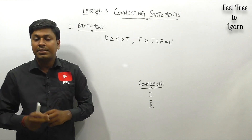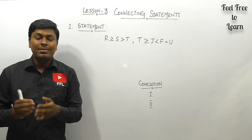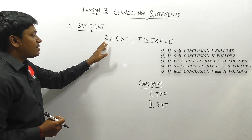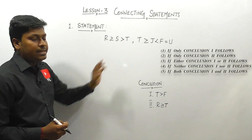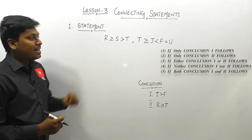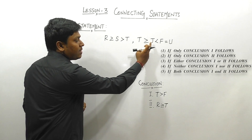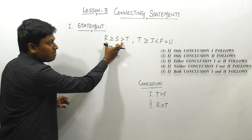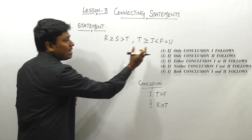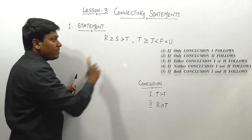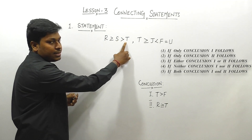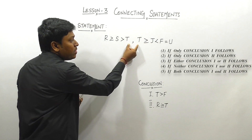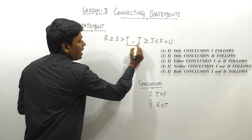That is the key difference between lesson two and lesson three. Question number one: Statement 1 is R ≥ S, S > T. Statement 2 is T ≥ J, J < F, F = U. Notice that statement one ends with T and statement two starts with T, so we can connect both statements using the element T.